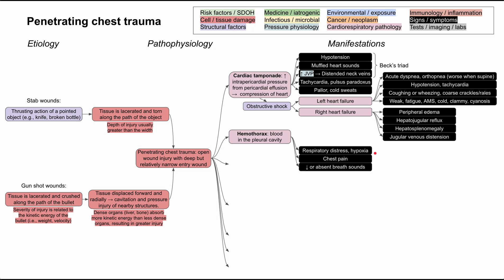Patients can have chest pain, decreased or absent breath sounds (as blood in the pleural cavity makes it hard for the lung to expand), decreased tactile fremitus, dullness on percussion, and flat neck veins — mostly from hemorrhage. When you're bleeding into the pleural cavities, you have less blood in circulation, making the neck veins appear flat.